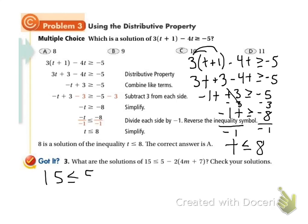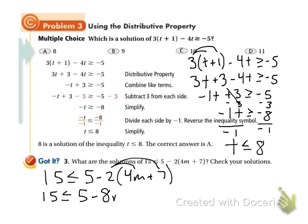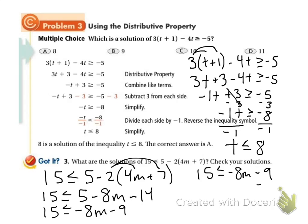15 is less than or equal to 5 minus 2 times (4m plus 7). The first thing I need to do is simplify, so I'm going to distribute in my negative 2 — don't forget the negative with it. 15 is less than or equal to 5: negative 2 times 4m is negative 8m, negative 2 times 7 is minus 14. I can combine my numbers: 5 minus 14 is negative 9, so it's 15 less than or equal to negative 8m minus 9. I'm going to add 9 to both sides — that cancels out — so I get 24 is less than or equal to negative 8m. Then I'll divide by negative 8. When I divide by a negative number, I need to switch my sign, and I get negative 3.